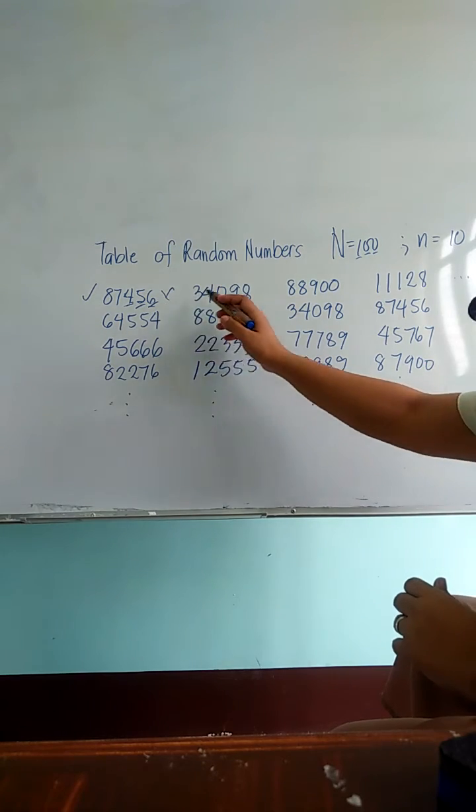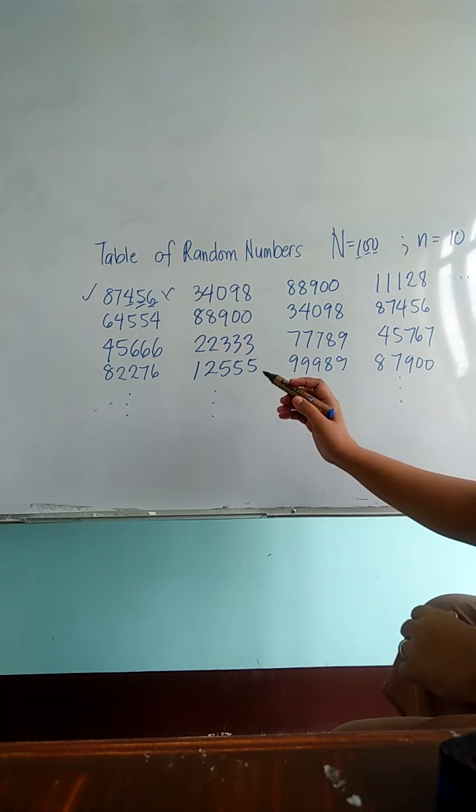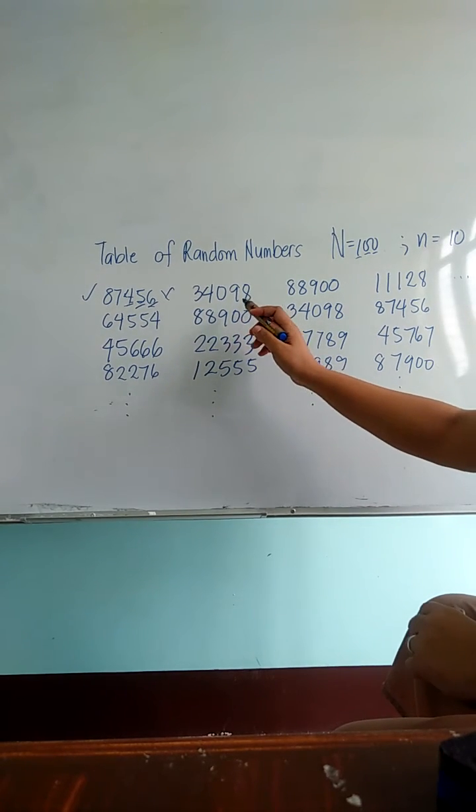Then you can go to the right or you can go downward. So the next number would be 34098.